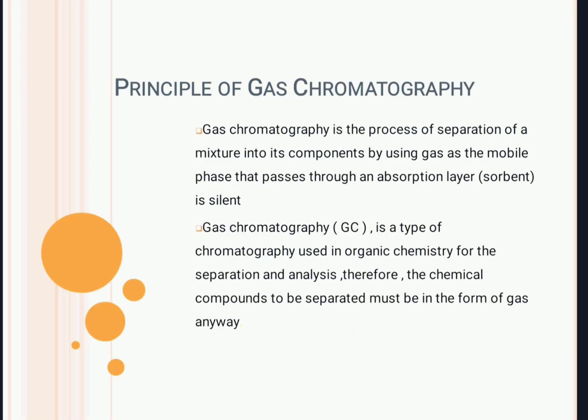Now we will see the principle of gas chromatography. Gas chromatography is a process of separation of a mixture into its components by using gas as the mobile phase that passes through an absorption layer — that is the solvent, or the stationary phase. It is mainly used in organic chemistry for separation and analysis. The chemical compounds to be separated must be in the form of a gas. This is a limitation: only volatile compounds can be analyzed or separated by gas chromatography.